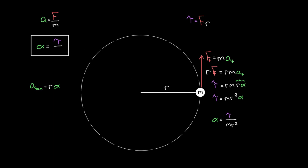This M·R² term is serving the same role that mass did in the regular Newton's second law. Mass was proportional to the inertia of an object — it told you how hard it was to get that object accelerating, how sluggish it is, how resistive it is to being accelerated. That's what this term down here is. It's in the denominator just like mass, and it's serving as the rotational inertia of the system.